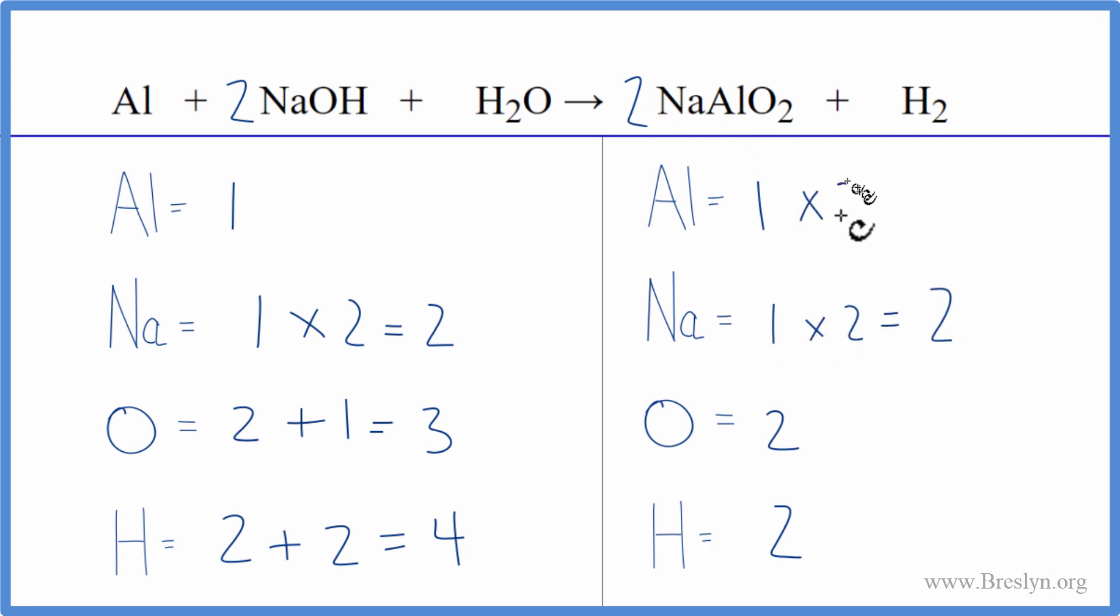One times two. That'll give us two aluminums. And then two times two. That'll give us four oxygen atoms.